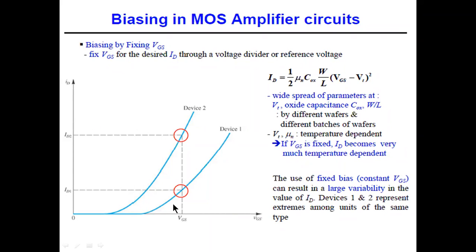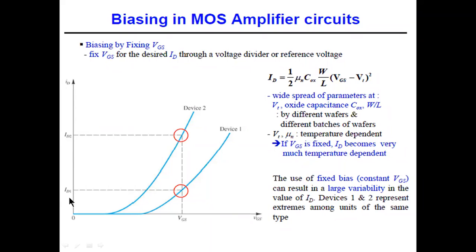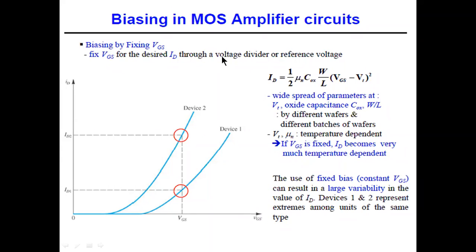For two different devices, the ID-VGS characteristics differ significantly. If VGS is fixed at one value, the two devices will have very different drain currents ID1 and ID2 — quite a large variation. That is why fixing VGS is a very bad biasing scheme.